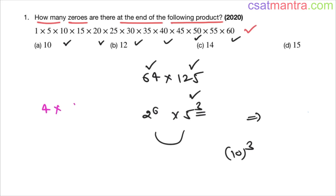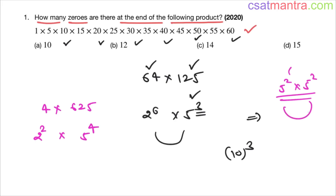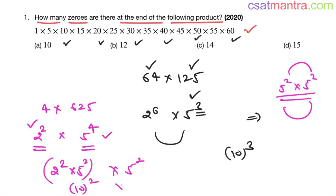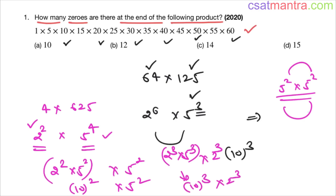Let's say the problem is 4 × 625. Here 4 is 2², and 625 is 25×25 = 5⁴. Since there are fewer 2s than 5s, the number of 2s determines the number of tens. You can write 2² × 5² × 5² = 10² × 5², giving 2 trailing zeros. Similarly, 2³ × 5³ can be written as (2×5)³ = 10³.